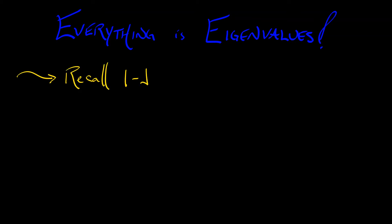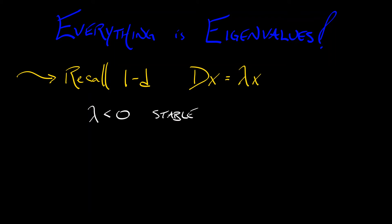Recall what we did back in 1D when we had a linear continuous time dynamical system of the form dx equals lambda x. We used lambda because it's an eigenvalue for that one-dimensional system — there's a one-by-one matrix with entry lambda, and it is of course the eigenvalue. When lambda was negative, that's a stable equilibrium at the origin. And when lambda was positive, we had an unstable equilibrium.